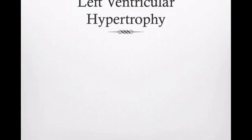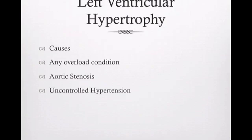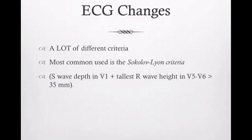Moving on to left ventricular hypertrophy. The same causes apply as right ventricular hypertrophy - anything causing an overload problem like aortic stenosis, uncontrolled hypertension, hypertrophic cardiomyopathy, anything causing that ventricle to be overloaded will give you ventricular hypertrophy. The most commonly used and easiest criteria is the Sokolow-Lyon criteria: take the S wave depth in V1 plus the tallest R wave in V5 or V6 - if it equals 35 millimeters or greater in a patient older than 35 years of age, you have diagnostic criteria for left ventricular hypertrophy.